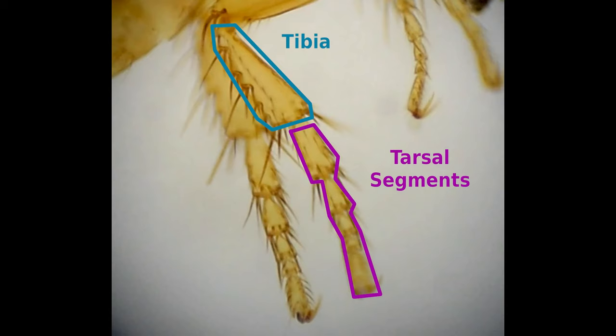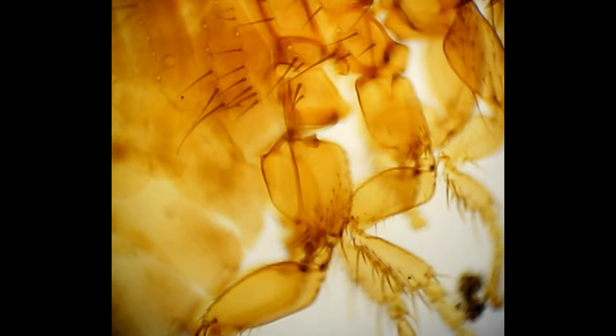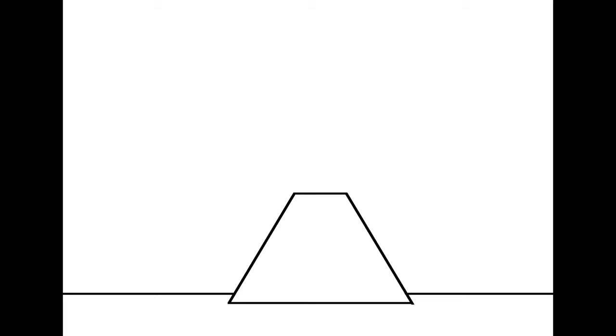The jumping mechanism of the flea wasn't worked out until relatively recently, in 1975, when a team of scientists led by Miriam Rothschild came up with an idea of how to photograph a flea jumping. They took advantage of a flea's natural tendency to climb to the highest point closest to them and jump off the top.